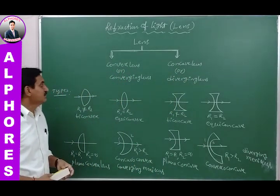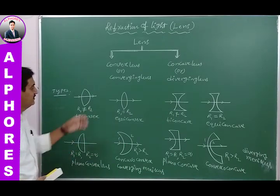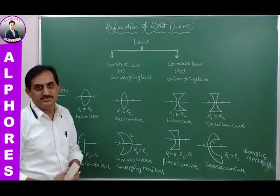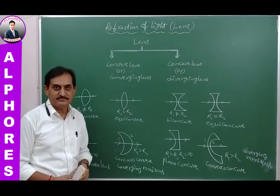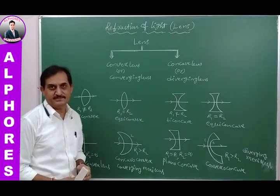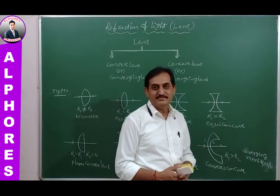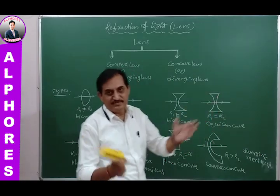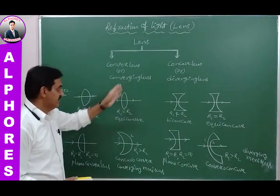A converging lens collects all light rays and focuses them at one point where the image is located. A diverging lens causes light rays to diverge from their original path. So converging lens is convex and diverging lens is concave.